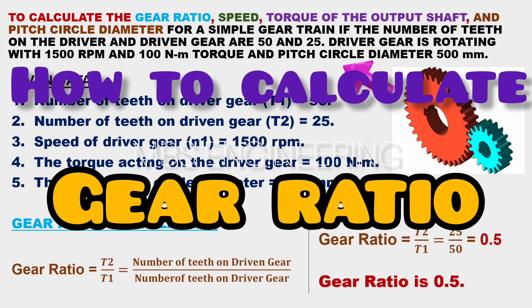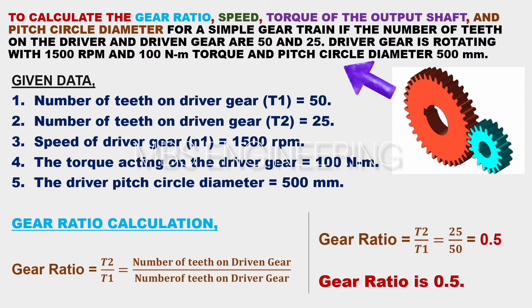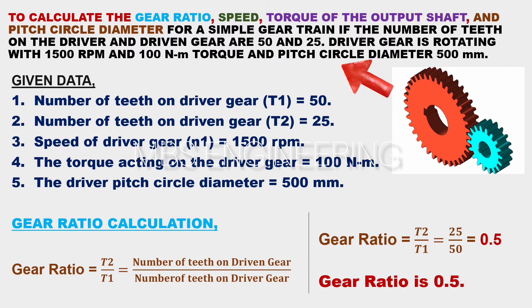We will calculate the gear ratio. Let's see an example. To calculate the gear ratio, speed, torque of the output shaft, and pitch circle diameter for a simple gear train: the number of teeth on the driver and driven gear are 50 and 25. The driver gear is rotating with 1500 RPM and 100 Nm torque.